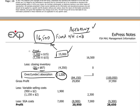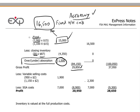Having done that, our gross profit — revenue minus production costs — is $29,850. Now for the non-production costs: variable selling costs were $2 per unit, and we sold 950 units, giving $1,900. Selling, general, and administrative costs — the non-production overheads — are $7,000. Total non-production costs of $8,900 are deducted from gross profit to give a profit figure of $20,950.